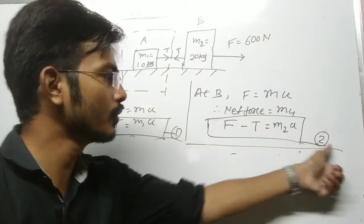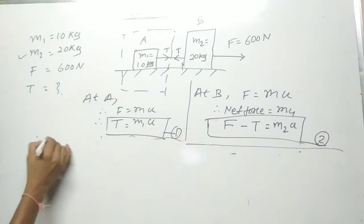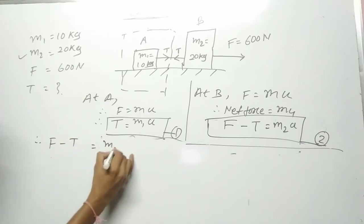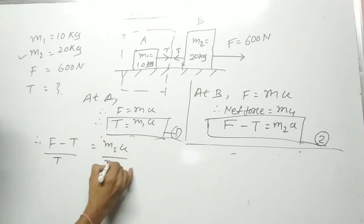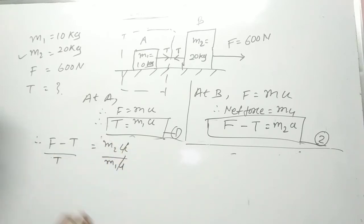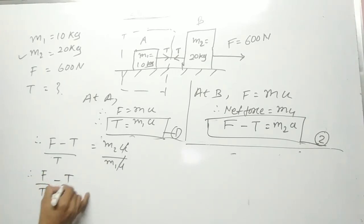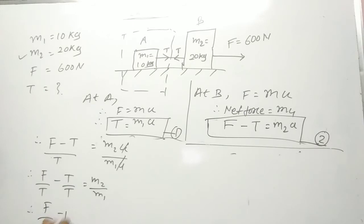Now taking the ratio of equation two divided by equation one: (F minus T) divided by T equals m2 a divided by m1 a. The acceleration 'a' cancels out. Splitting the left side: F divided by T minus T divided by T equals m2 divided by m1. So we get F/T minus 1 = m2/m1.